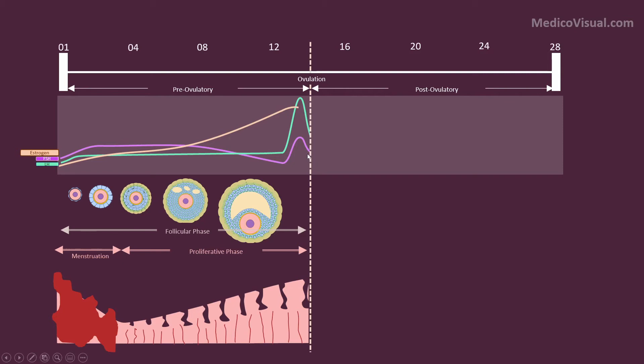Then there is ovulation at about day 14, and the secondary oocyte is released. The remaining follicle is converted into the yellow progesterone-producing body; we call it corpus luteum.